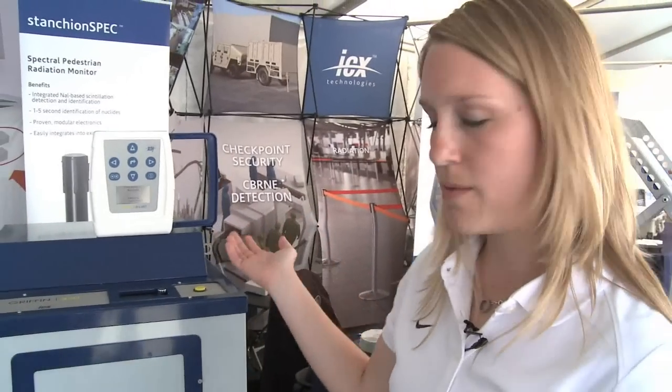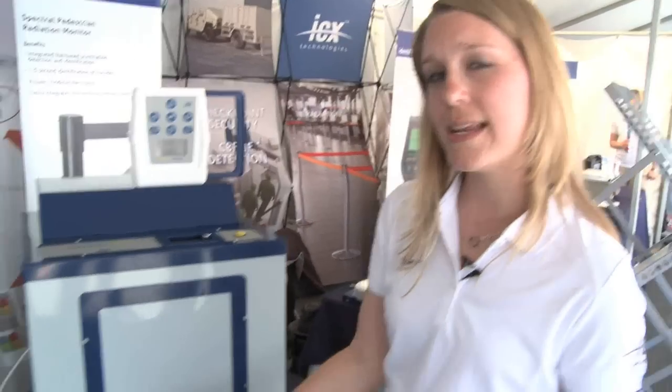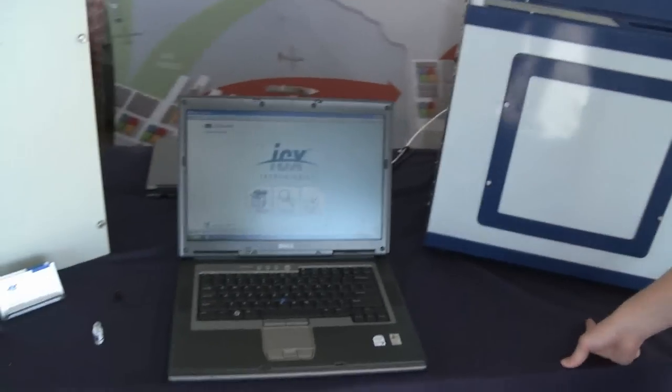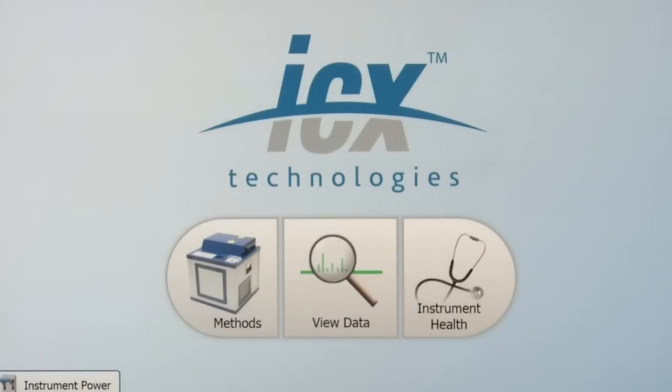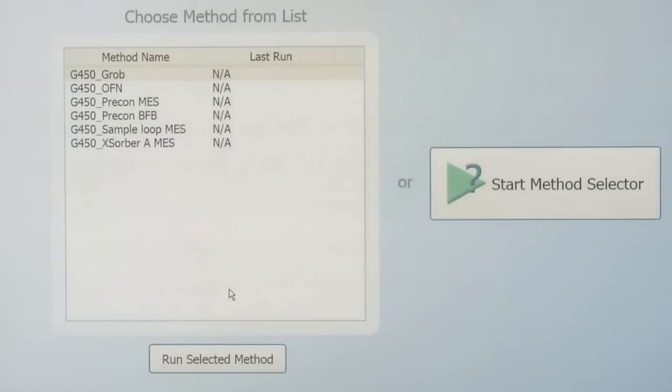Once you've docked your Xorber, you can select your method using the Griffin system software. Today we're using Level 1 software, which is a simplified user interface. I'm not quite sure what method to use, so I'm going to use the method selector. If you knew what method you wanted from your training, you could just select from the list.